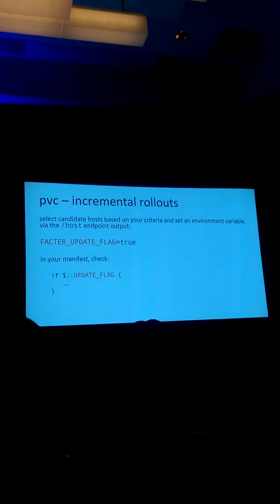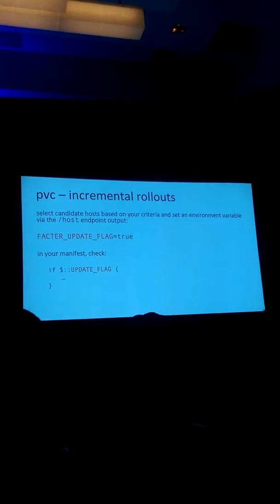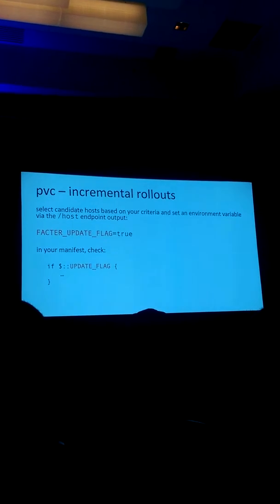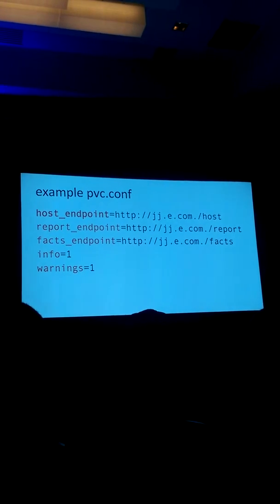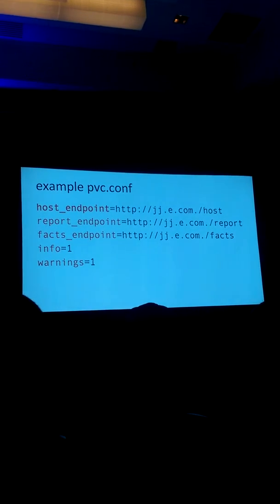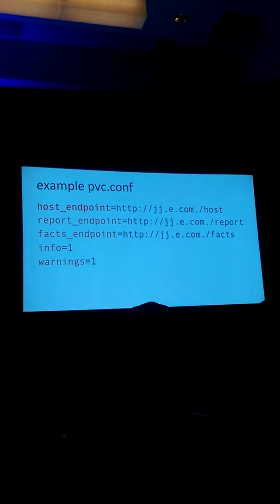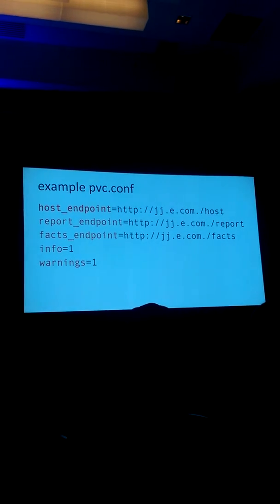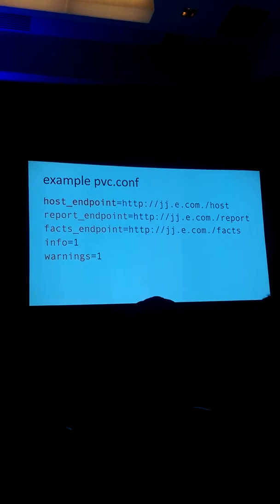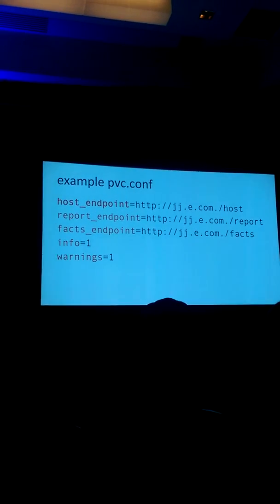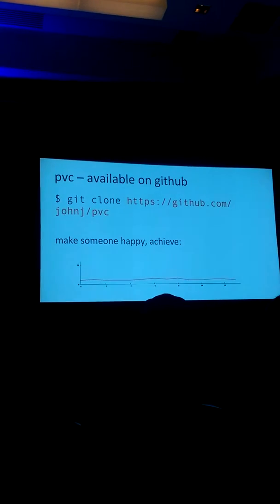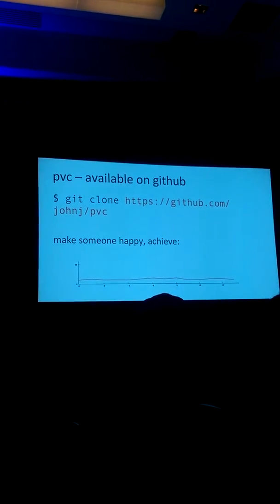For incremental rollouts, just set your feature flag — the special Facter environment variable. I wanted to keep this really simple. Here's an example pvc.conf: there's your host endpoint, your report endpoint, your facts endpoint. If you really care what it's doing, set log level to 2.1. Warnings — you probably always care about those. And that's available on GitHub. That's how we got to this flat curve.